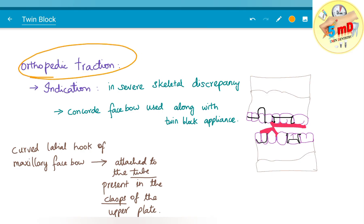For orthopedic traction, the indication is in severely skeletal discrepancy when noted and concord face bow is used along with the twin block appliance if needed.